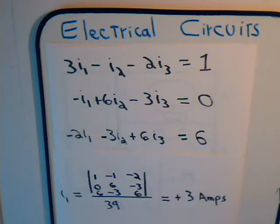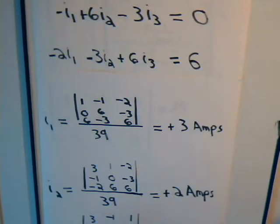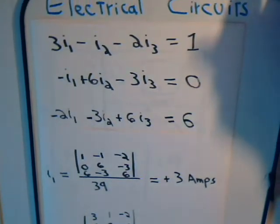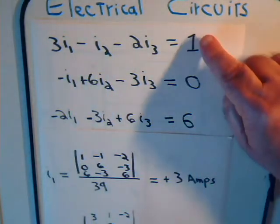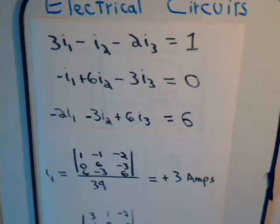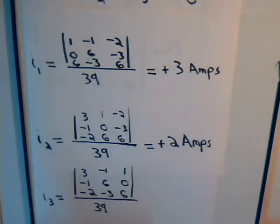Then these column numbers and these column numbers stay the same. To determine current I2, we replace these column numbers with these column numbers. That's what we have shown right here. This column and this column remains unchanged.